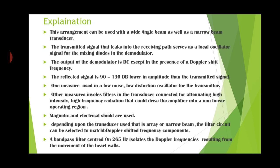This arrangement can be used with wide angle beam as well as narrow beam transducers. The transmitted signal that leaks into the receiving path serves as a local oscillator signal for the mixing diodes in the demodulator. The output of the demodulator is DC except in the presence of Doppler shift frequency. The reflected signal is 90 to 130 dB lower in amplitude than the transmitted signal.